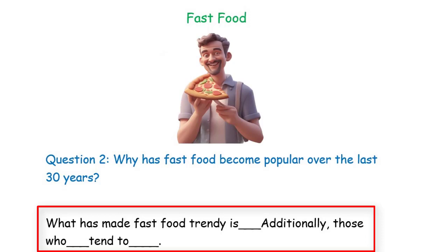Now let's listen to a band 9 response where the speaker will use the same template when answering the same question. Why has fast food become popular over the last 30 years? What has made fast food trendy is its affordability and convenience. Additionally, those who lead busy and hectic lives tend to gravitate towards fast food as it allows them to grab a quick meal on the go without cooking, preparation, or washing up afterwards.